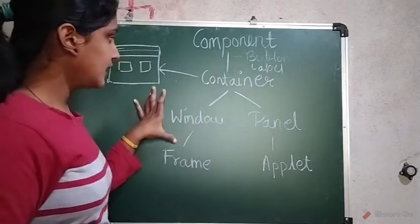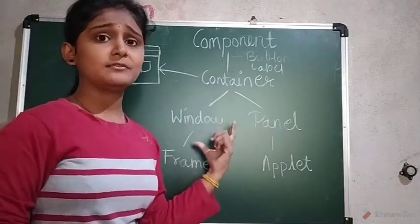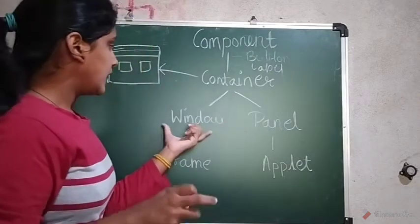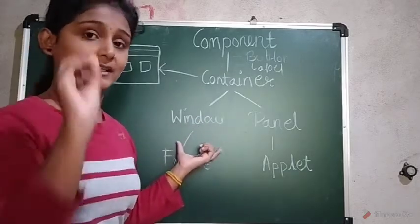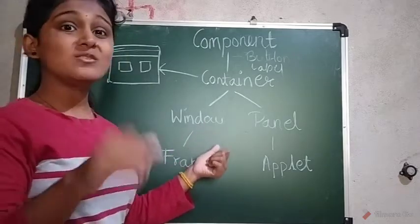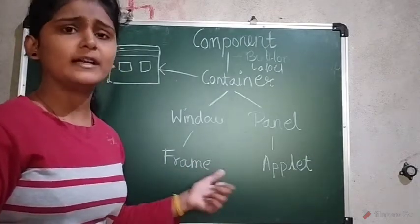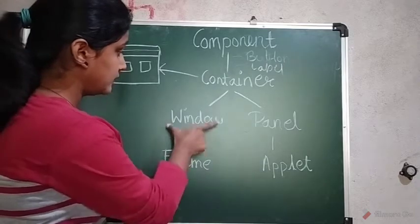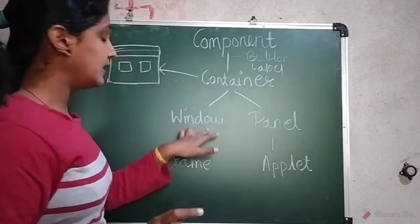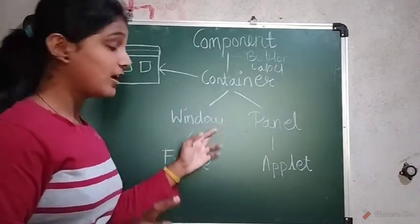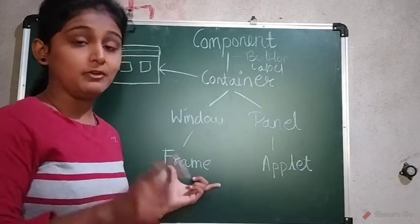Next is Window. The parent class of Window is Container, so Window is a container. However, we don't create a Window object directly — Window is not used directly in the program. To make a window, we make use of its subclasses: Frame or Dialog.